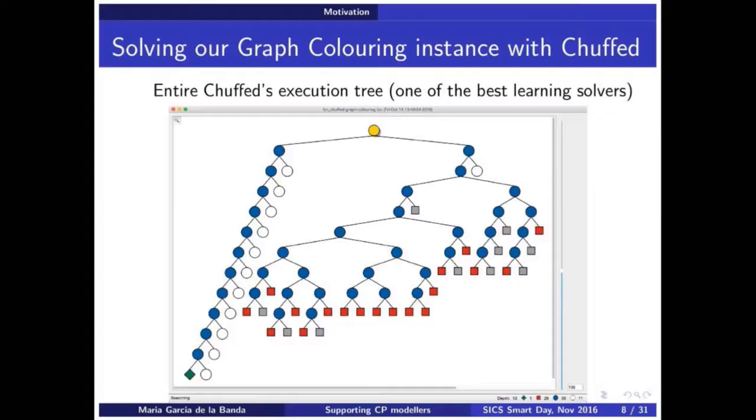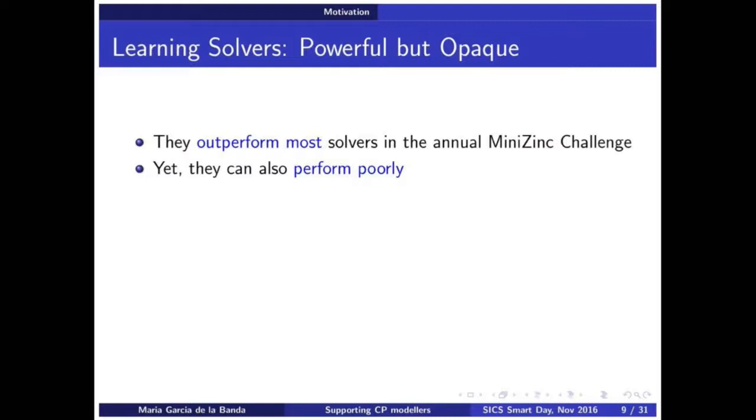Now, that is exactly the same instance, so same model, same data, but solved with a different solver. This is a learning solver called chaffed, and all together, it takes less than 100 nodes. So from 3,000 to 100 nodes. Why? Because of learning solvers. Learning solvers are incredibly powerful, very powerful. They outperform most solvers in the mini-sync challenge that Peter talked about. Every year, we do a competition among solvers in CP. They usually tend to outperform everything, but they can also perform appallingly badly. And no one knows really why, or in some sense, when to predict. Is it going to perform well, or is it going to perform not well? It's not that clear. It's not easy to predict, because they are so opaque. You don't know what the solver is doing.